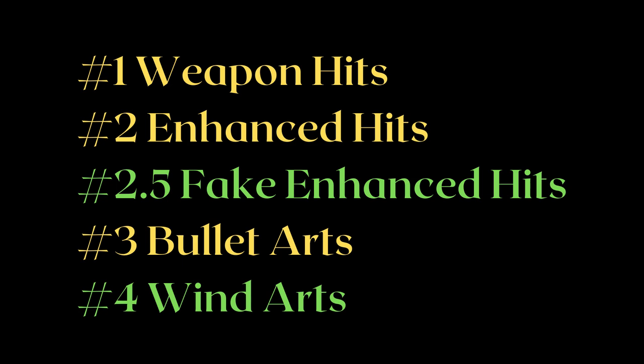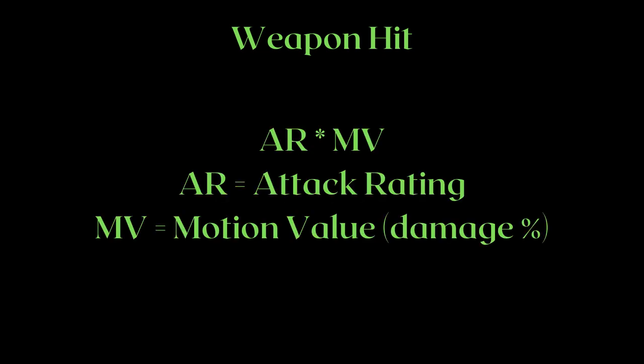Chapter 1: Weapon Hits. The simplest weapon arts of them all. They abide by the rules of a regular weapon attack, hence the name weapon hits. It is simply a question of AR times MV, where the AR is the attack rating of the weapon using the weapon art, and the MV is the motion value, otherwise known as damage percent of the weapon art. Simple right?